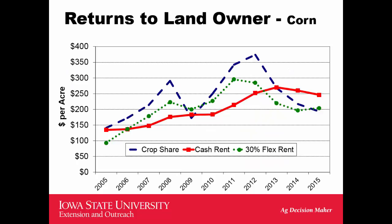If we take a look at return to owners, crop share landowners participated in the rally in prices and yields, and had some pretty outstanding revenues. Now they've seen those revenues decline because of declining grain prices. Yields have remained good, but prices have been a challenge. Cash rent was slower to follow up in the rally, peaked out in 2013, and declined in 2014, 2015, and 2016.